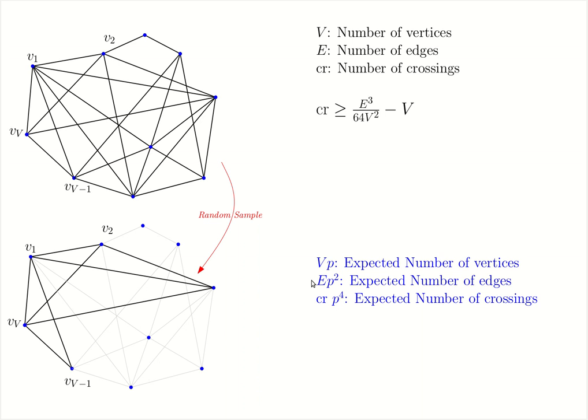Observe that the probability of an edge surviving is not independent of a probability of another edge surviving. However, the expected value does not care about independence. And thus, we can derive these three observations.